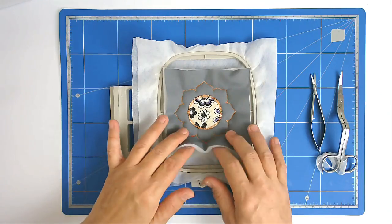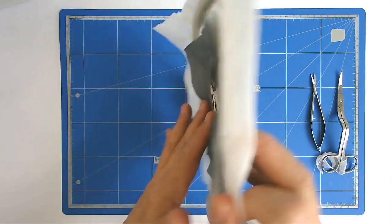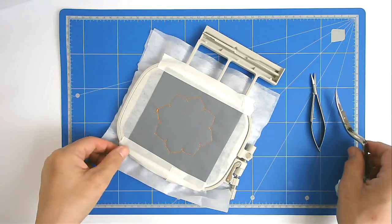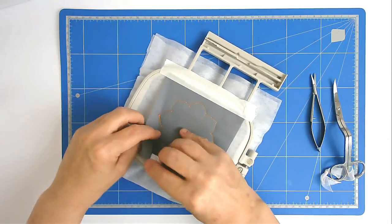We're now going to trim off all the excess fabric and batting, both from front and back, and I like to start from the back because it's easy to forget about it. So I'm just going to remove the tape.